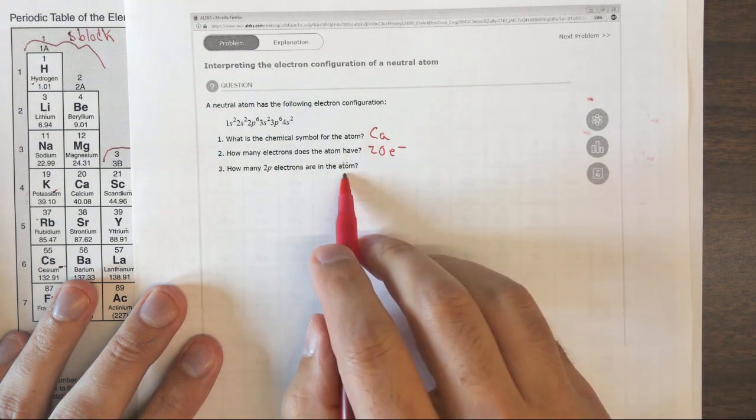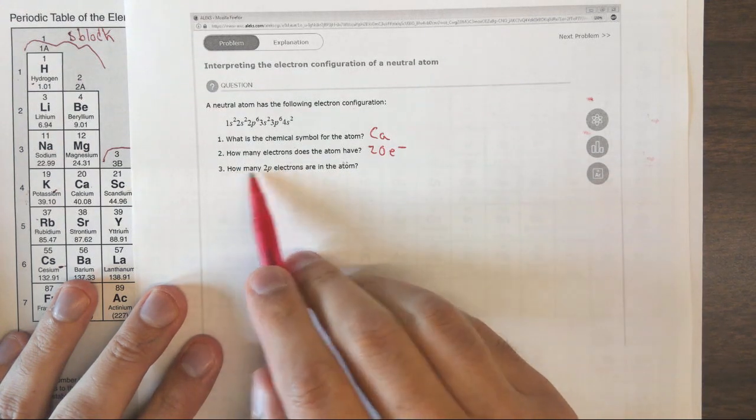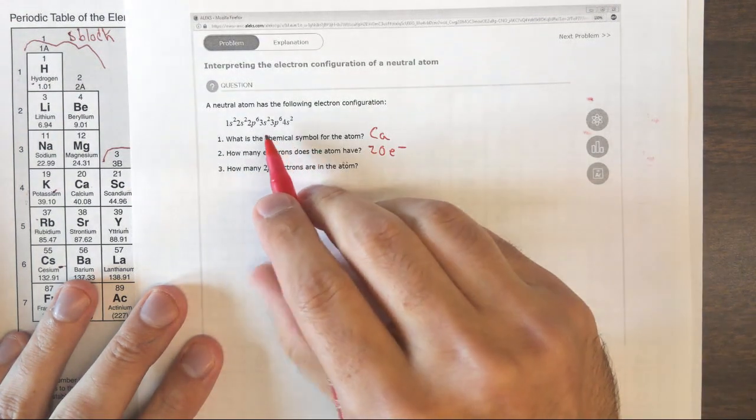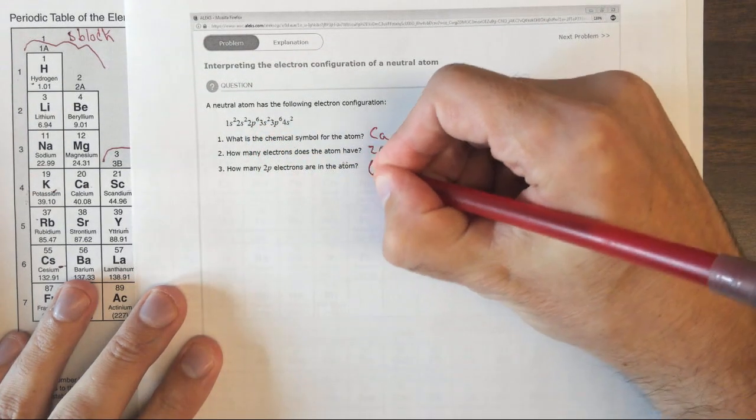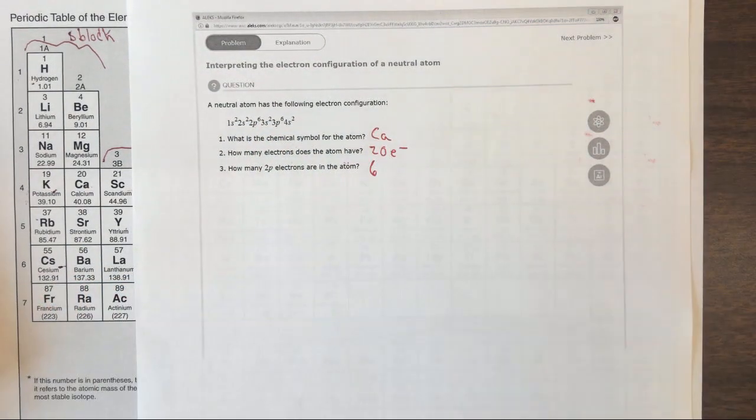How many 2p electrons are in the atom? Well, if you look at 2p, the 2p is full, so it has 6 electrons.